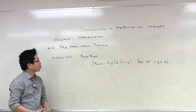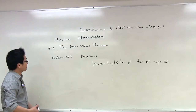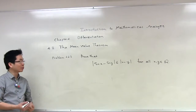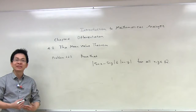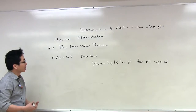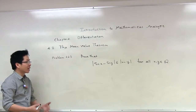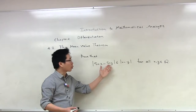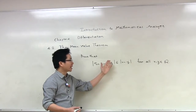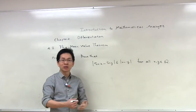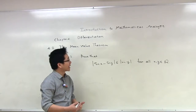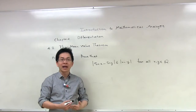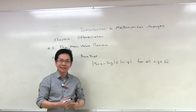In this video we are going to work on problem 4.2.3 from the textbook. We are going to use the mean value theorem to prove that the absolute value of sine of x minus sine of y is less than or equal to the absolute value of x minus y, for all x and y in R.